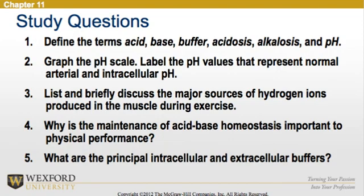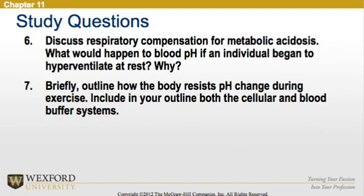Question 3 — List and briefly discuss the major sources of hydrogen ions produced in muscles during exercise. Question 4 — Answer the question: why is the maintenance of acid-base homeostasis important to physical performance? Question 5 — Identify the principal intracellular and extracellular buffers. Question 6 — Discuss the respiratory compensation for metabolic acidosis, and answer: what would happen to the blood pH if an individual began to hyperventilate at rest, and why? Question 7 — Briefly outline how the body resists pH change during exercise, including both the cellular and blood buffer systems.